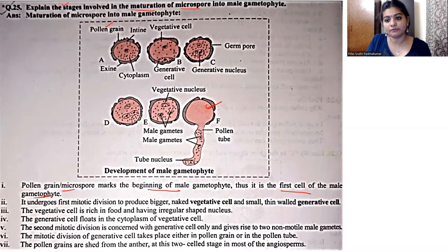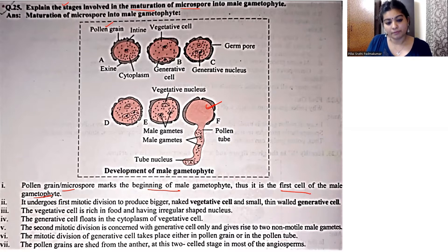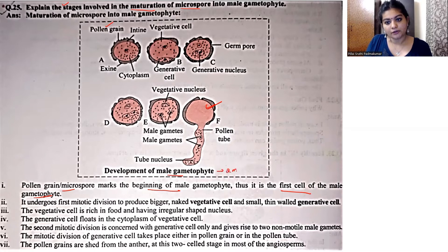It is the first cell of male gametophyte. याद रखना — male gametophyte development के लिए दो mitotic divisions involved होते हैं.